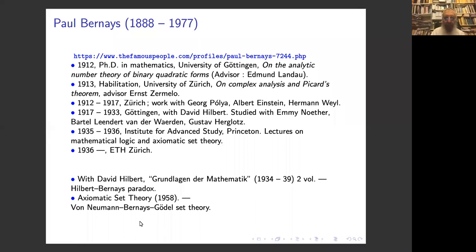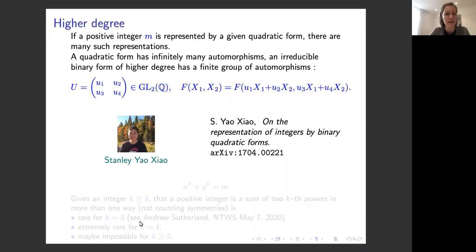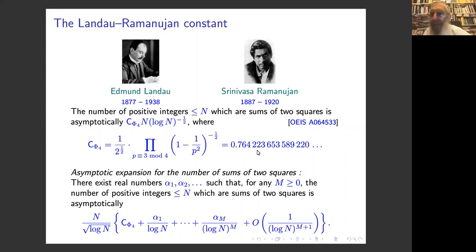A question from Fabian Patsuki: are the αᵢ algebraic or transcendental? That is a good question which we don't know. Even for the constant C, we do not know whether it is transcendental or not — it is expected that it is transcendental.